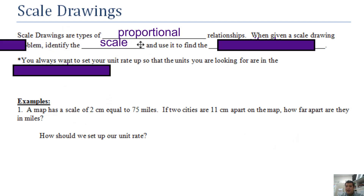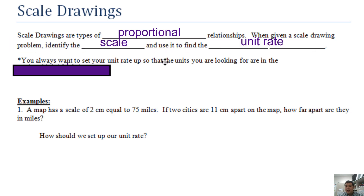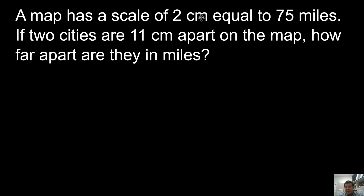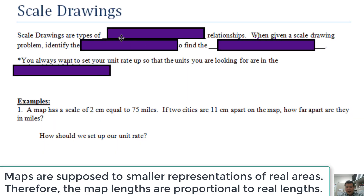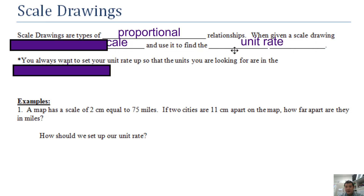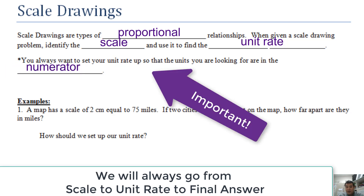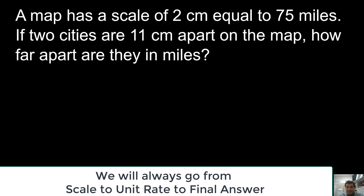When given a scale drawing problem, identify the scale and use it to find the unit rate. You always want to set up your unit rate so that the units you are looking for are in the numerator. The first question says: a map has a scale of two centimeters equal to 75 miles. The scale is two centimeters equals 75 miles.